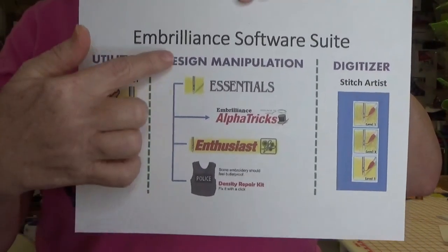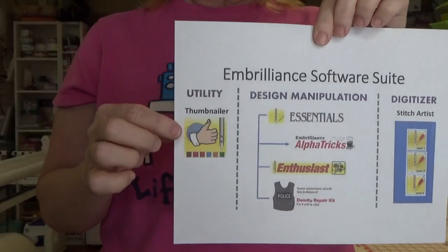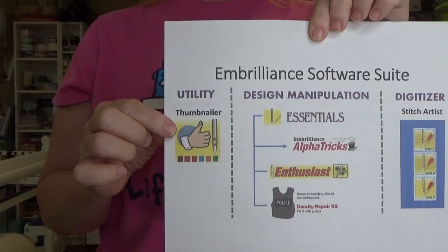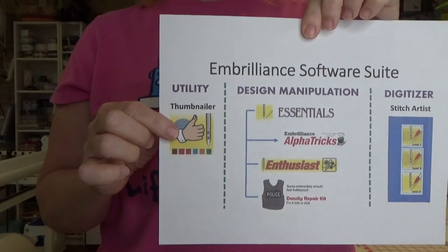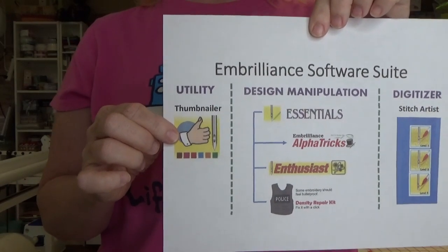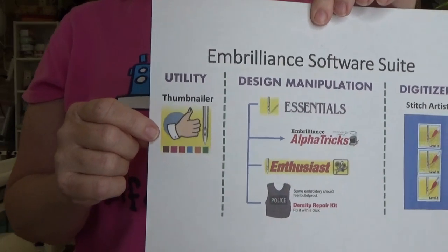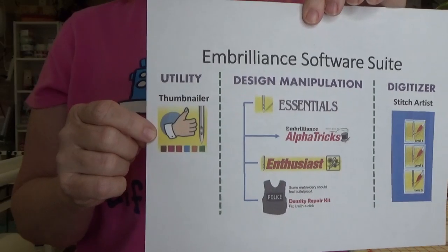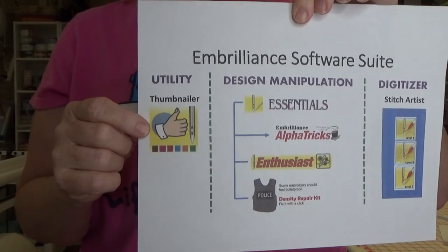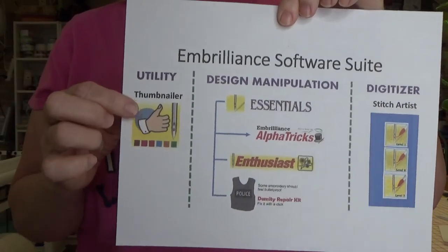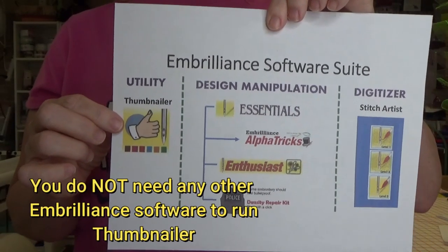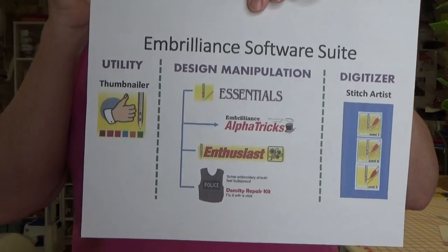There are a lot of different features in each one of these pieces of software. Over here we have what's called a utility — the Embrilliance Thumbnailer. It has a single purpose in life. All that happens when you install it is you get a single dashboard. What it does is allow you to see embroidery files on your computer as if you were looking at pictures in your pictures folder. That's it — that's the only thing it does. It doesn't do any design manipulation at all.